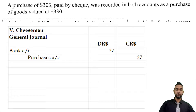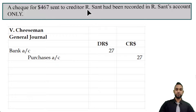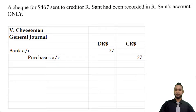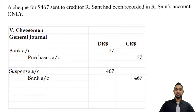They said no narratives are required, so let's go to the second error. A check for $467 sent to creditor RSAN had been recorded in RSAN's account only. If we send a check to somebody, we debit them — so we did debit RSAN. But we didn't credit the bank account; we recorded it in RSAN's account only, meaning the other account affected by the transaction was not updated. So we're missing a credit to bank. Since every credit must have a corresponding debit, we use the suspense account.